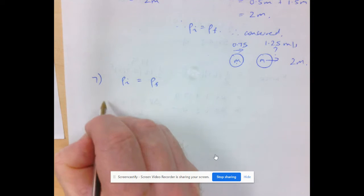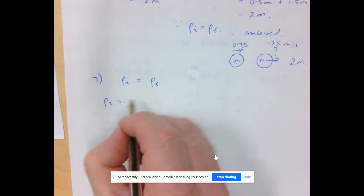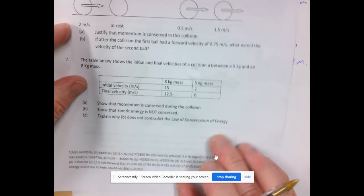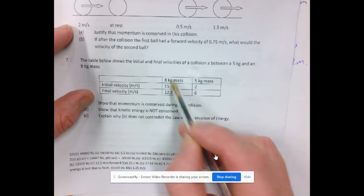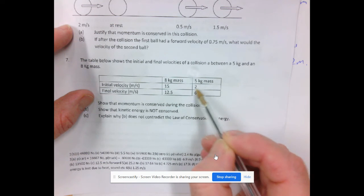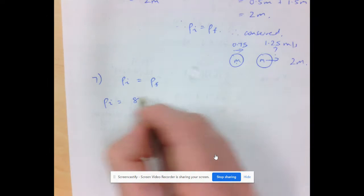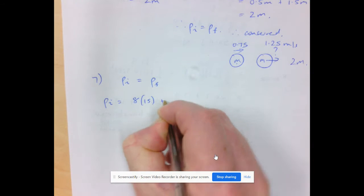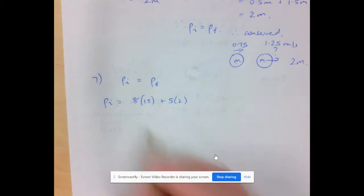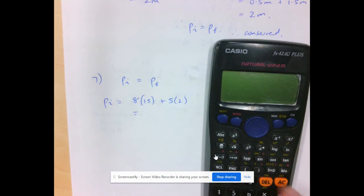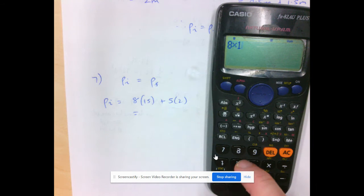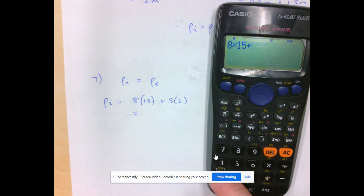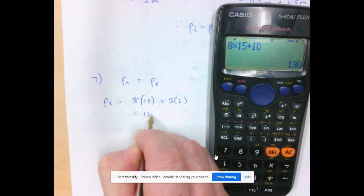So the initial momentum would be the 8kg mass times 15 plus the 5kg times 2. So it's 8 times 15 plus 5 times 2. Using the calculator, that's 130 newton seconds.